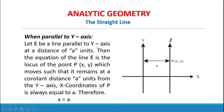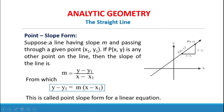When parallel to y-axis: let L be a line parallel to the y-axis at a distance of a units from the origin. The equation of line L is the locus of point P(x, y) which moves such that it remains at a constant distance a units from the y-axis. The x-coordinate of P is always equal to a, therefore x = a is the equation of line L.